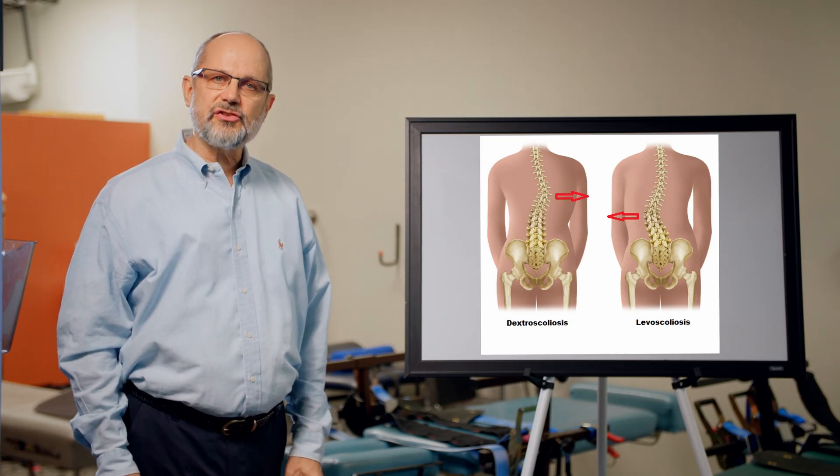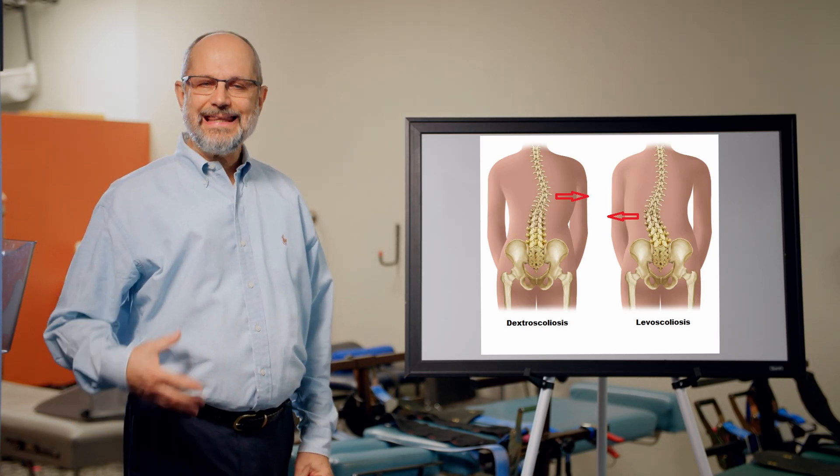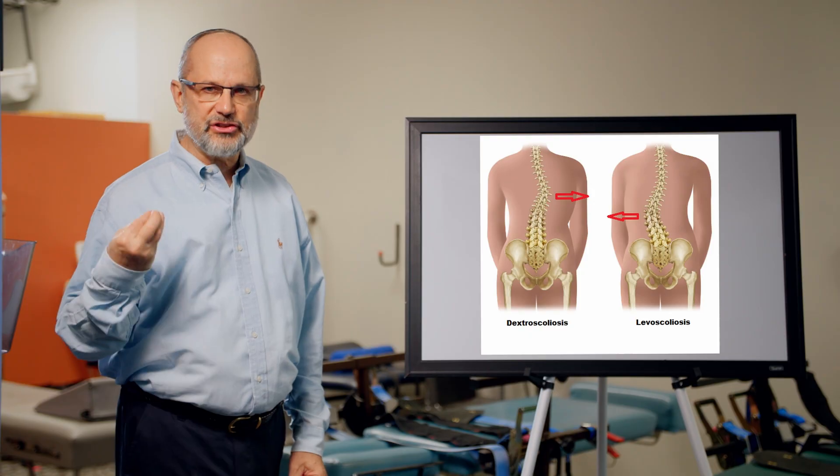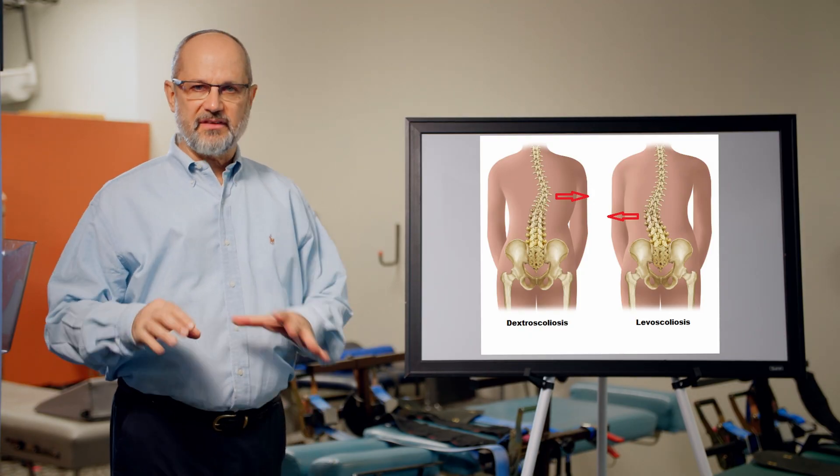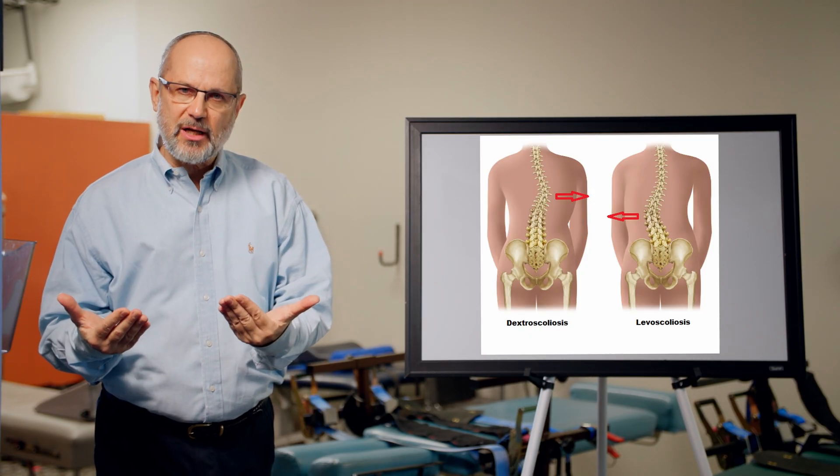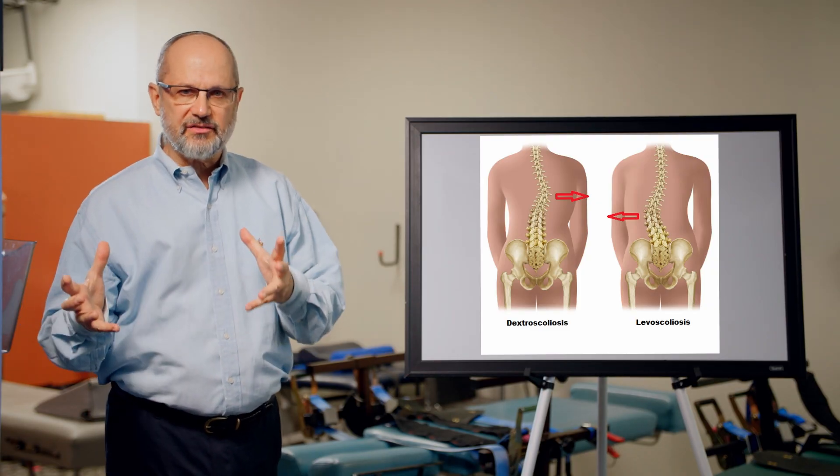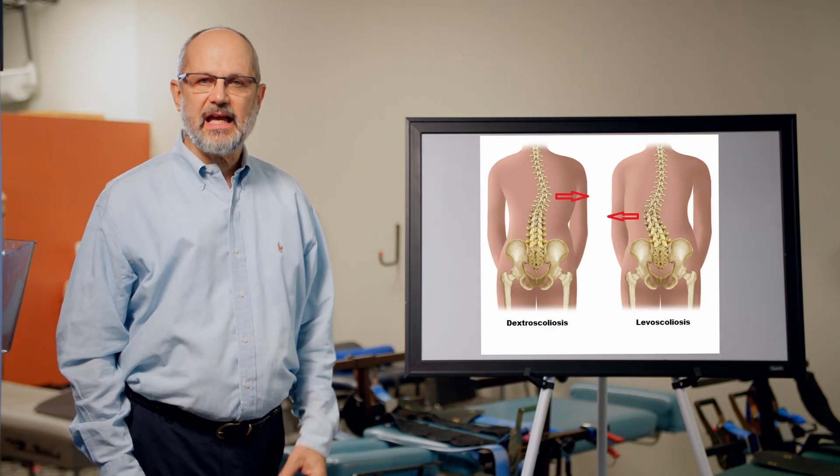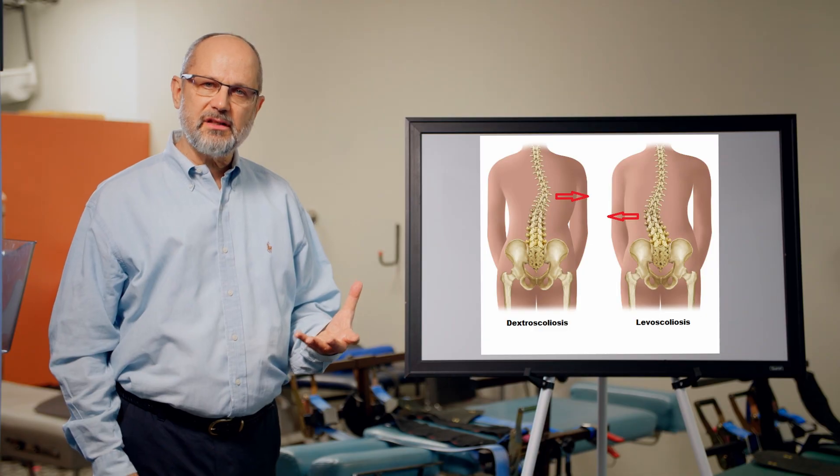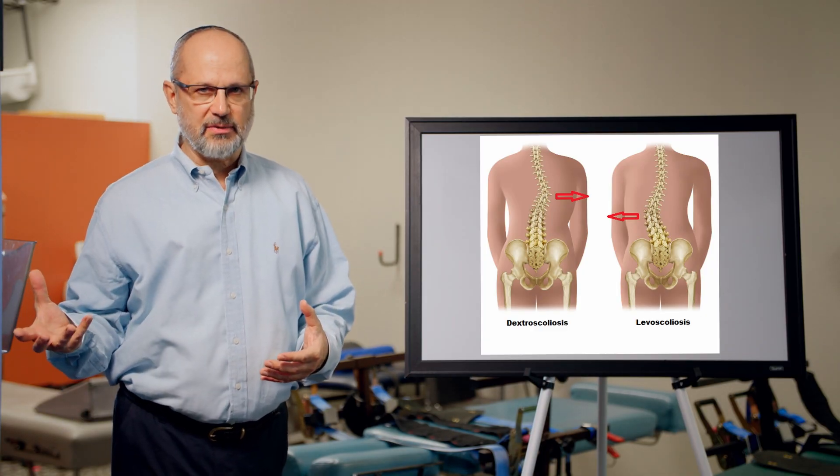Now interestingly, dextroscoliosis lumbar in the adult with de novo or degenerative scoliosis, remember this is the type of scoliosis that only begins to show up at around 40 to 50 years of age, they could just as commonly have a dextroscoliosis lumbar as a levoscoliosis lumbar.